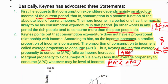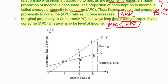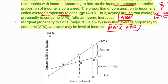Now let's look at the diagram. The y-axis shows consumption expenditure and saving, and the x-axis shows income level. The C equals Y line is the 45-degree line, meaning if consumption equals income there is zero saving. The actual consumption line has some autonomous consumption and its slope represents the marginal propensity to consume.